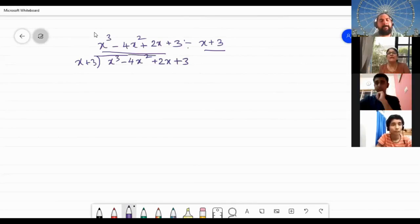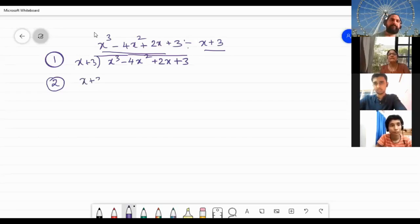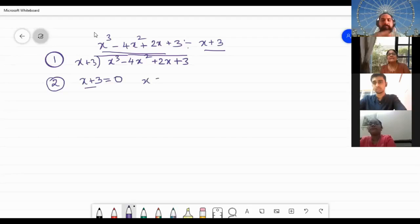This is method one. What is the second method that we had said? You can find the remainder by substituting. Now if we want to see x + 3, we equate it to 0, and you get x is equal to -3 in this case, and put it in this polynomial.